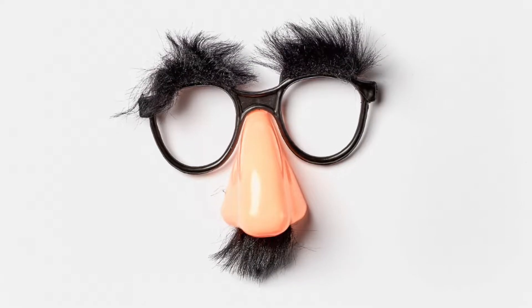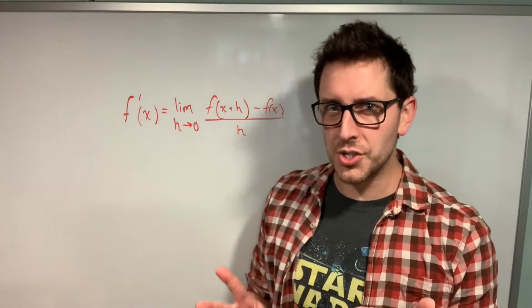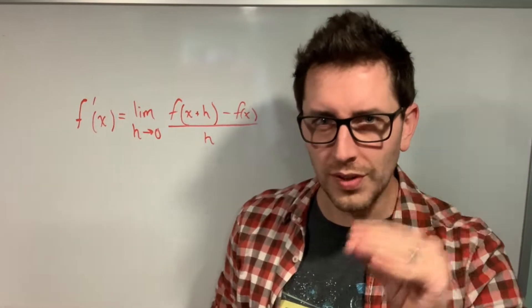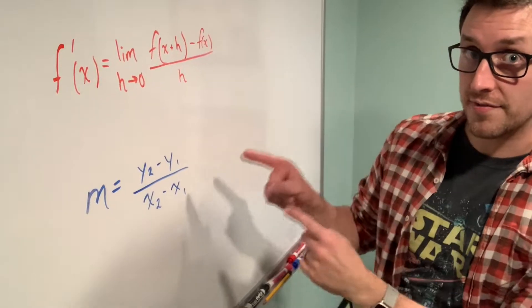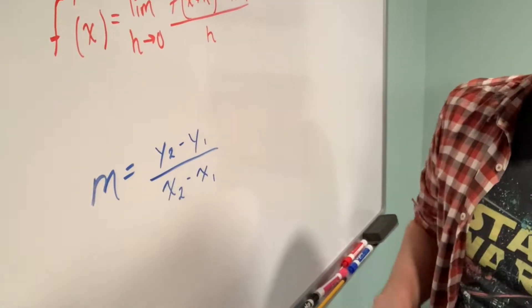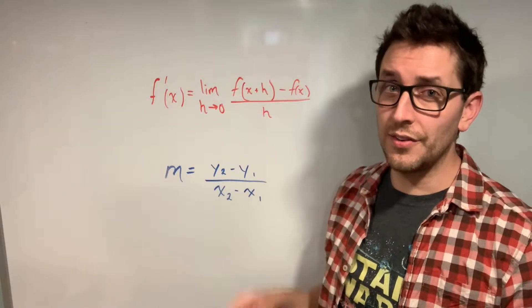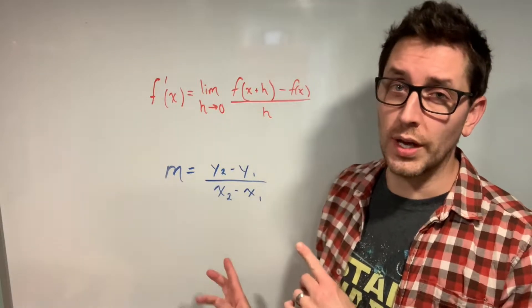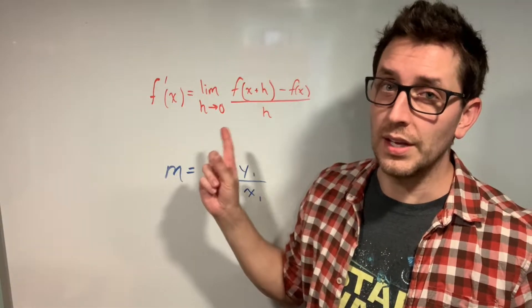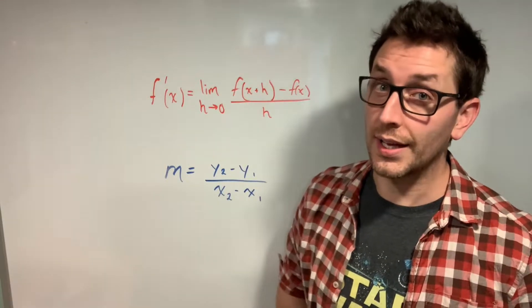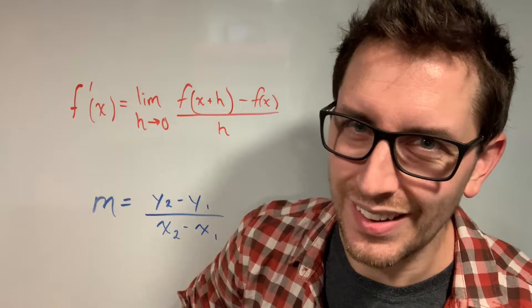You know, those mustache glasses disguises. Well, what if I told you that this mess was actually the equation for the slope of a line in disguise? Yes, this very equation that you have applied millions of times to calculate the slope of a line. The only difference here is that this familiar equation will calculate the slope between two points on a line, whereas this little number will calculate the instantaneous rate of change at a given point on a curve. We should probably unpack that a little bit.